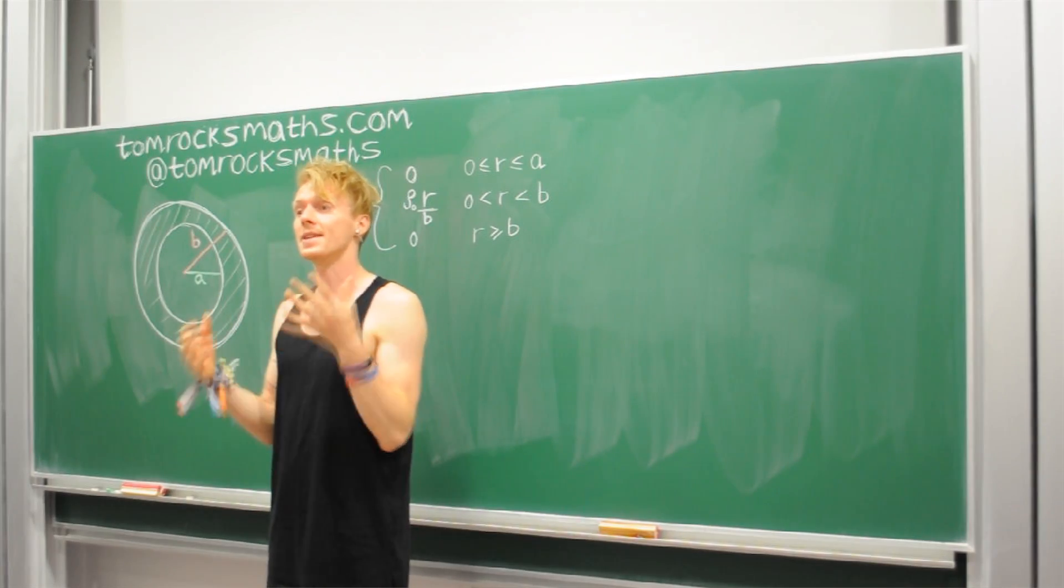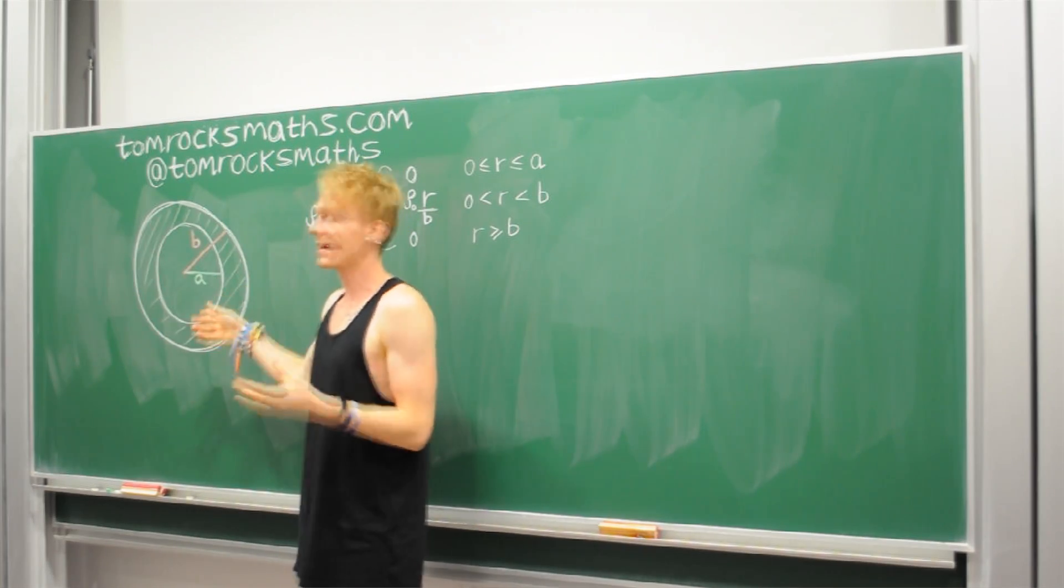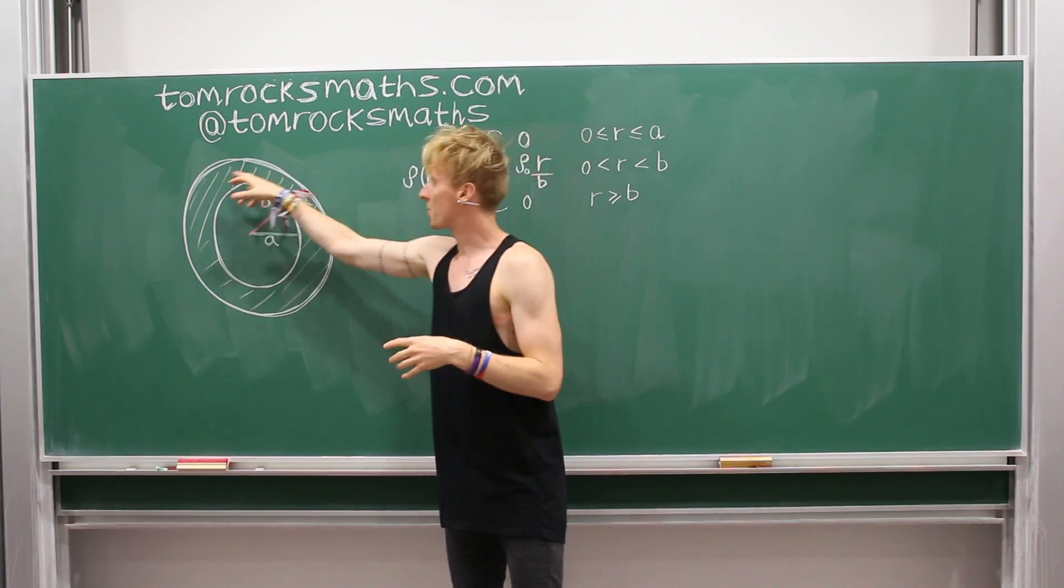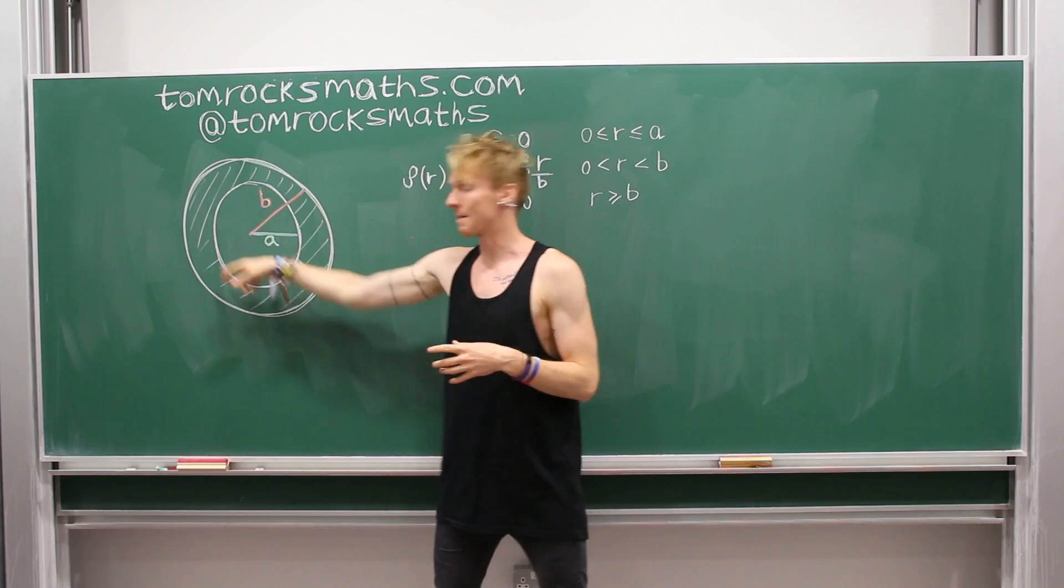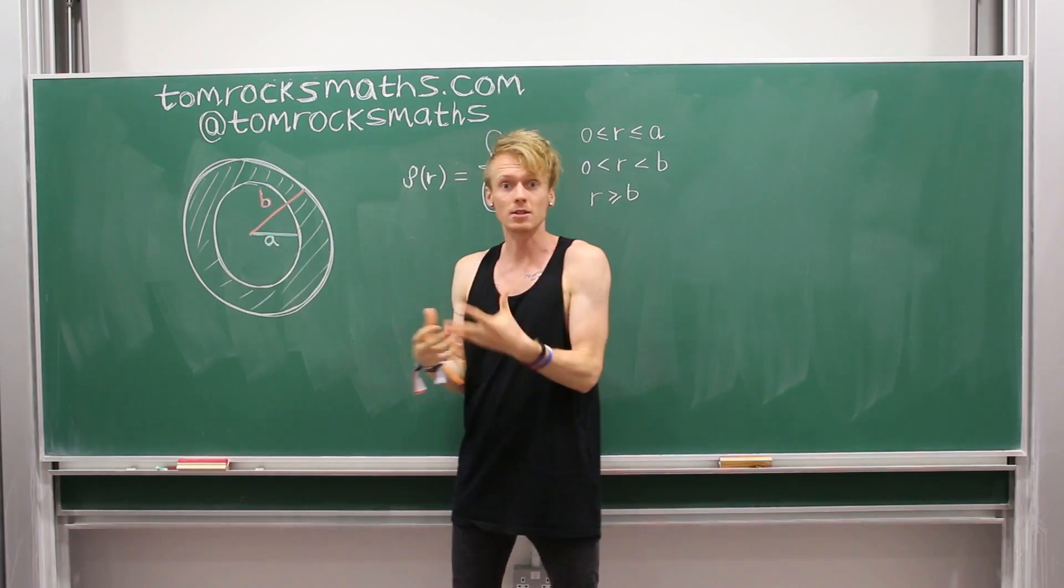So now let's define the setup. We have our hollow Earth here, like a doughnut shape. So this is the shell which has mass and in the middle it's hollow, there's no mass.